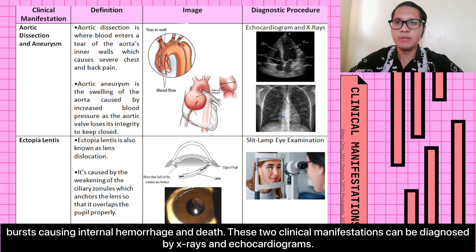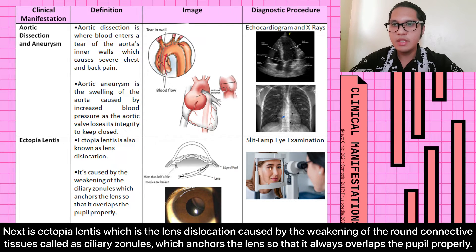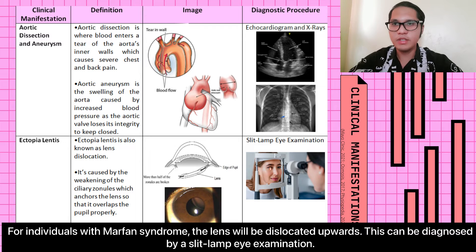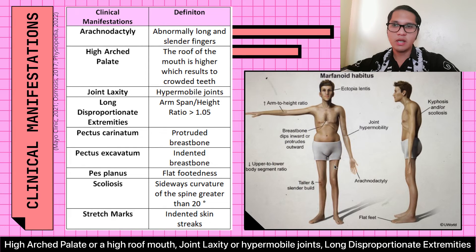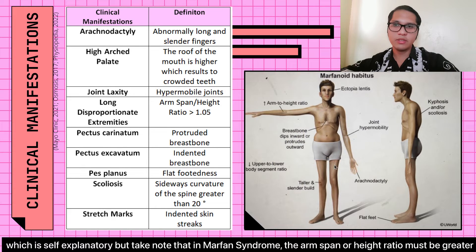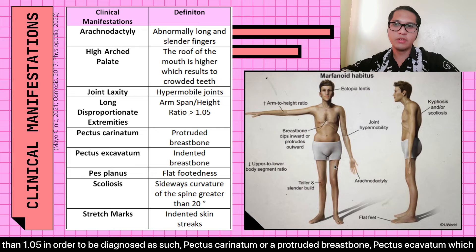These two clinical manifestations can be diagnosed by X-rays and echocardiograms. Next is ectopia lentis, which is lens dislocation caused by the weakening of the round connective tissues called ciliary zonules, which anchor the lens so that it always overlaps the pupil properly. For individuals with Marfan Syndrome, the lens will be dislocated upwards. This can be diagnosed by a slit lamp eye examination. The next clinical manifestations are arachnodactyly, which refers to abnormally long and slender fingers; high arch palate, or a high roof of the mouth; joint laxity or hypermobile joints; and long, disproportionate extremities. For Marfan Syndrome, the arm span to height ratio must be greater than 1.05 in order to be diagnosed as such.